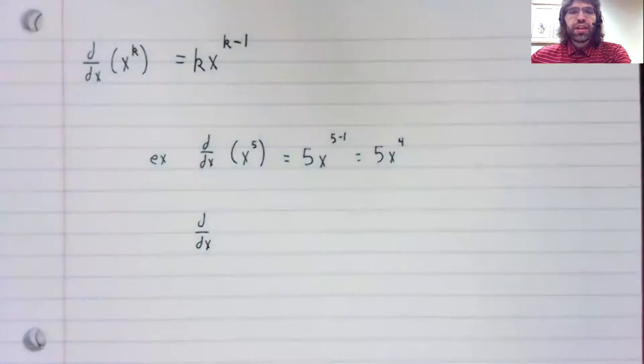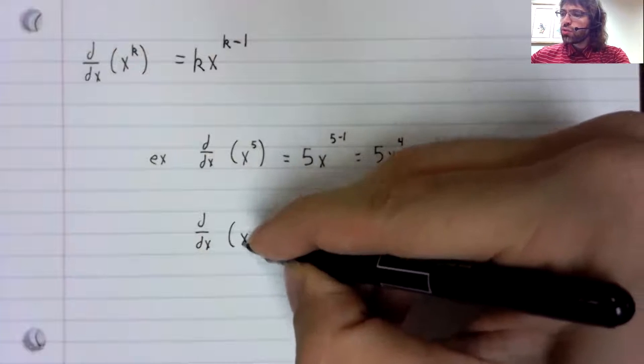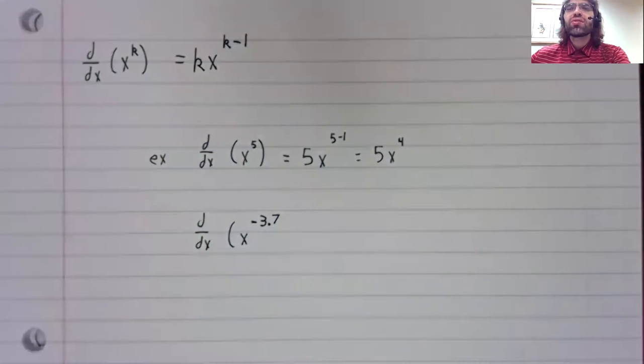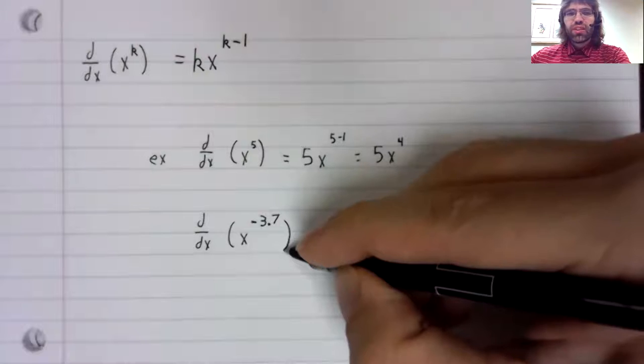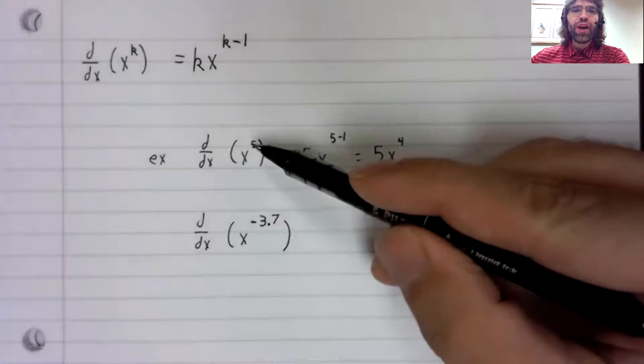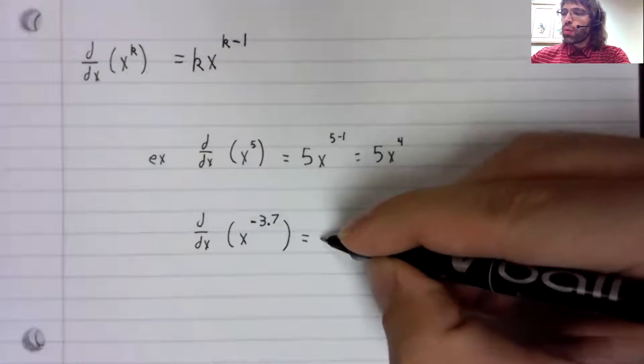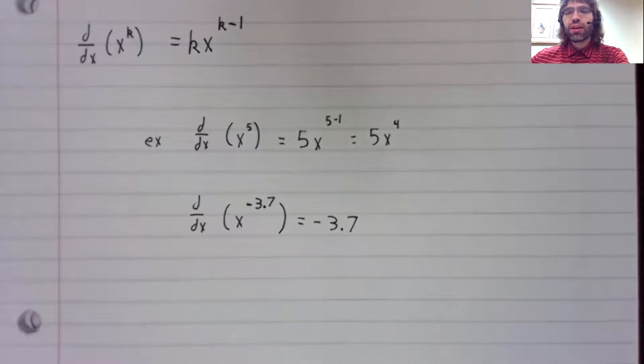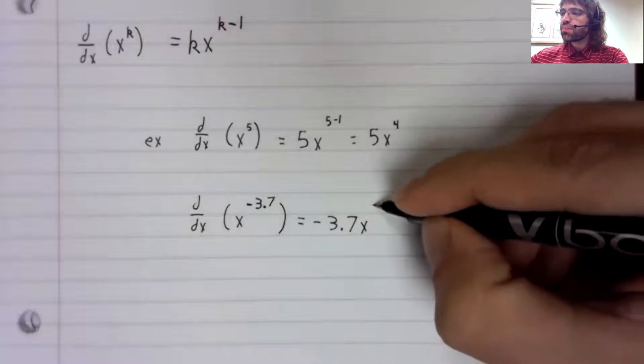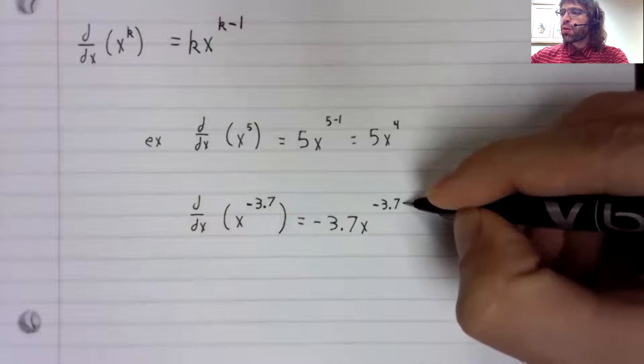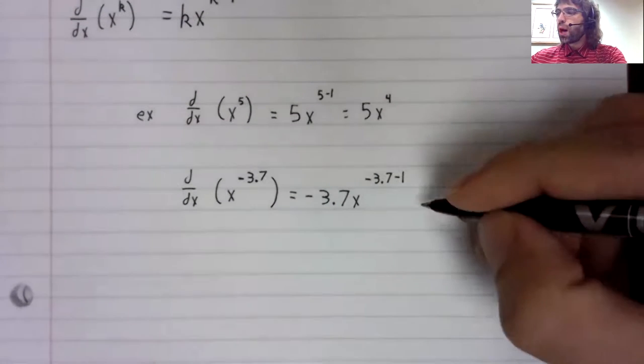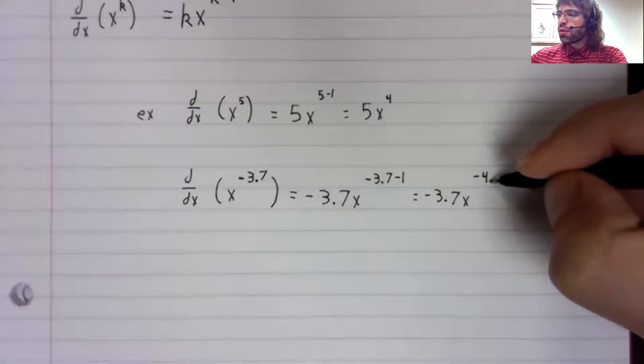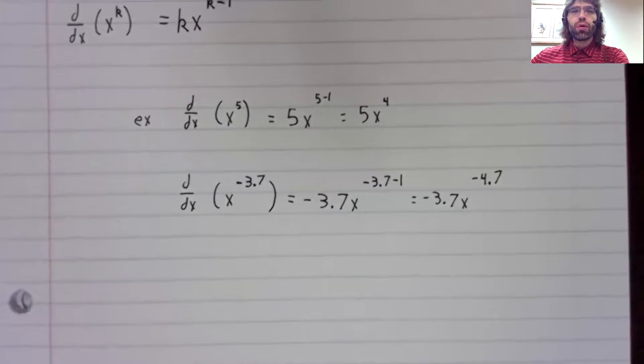The derivative of x to the negative 3.7. Obviously, an uglier power than 5. But the rule works exactly the same. That negative 3.7 comes down in front of the x. And in the power, we subtract 1, giving us a power of negative 4.7.